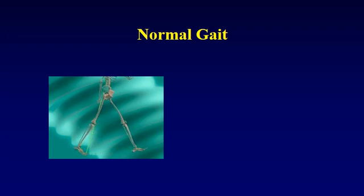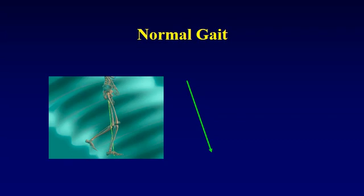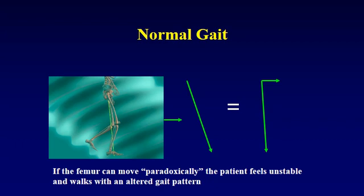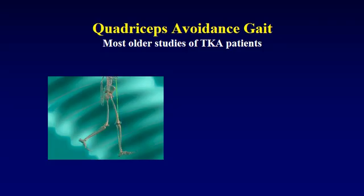If we analyze this gait slightly differently, we see that just after heel strike, the vector is significantly directed from posterior to anterior onto the floor. And if we resolve that vector into both horizontal and vertical components, we can see that there is a very significant horizontal component. And if the foot is firmly fixed to the floor, then the body, the opposite leg, and the femur on the support side all tend to move forward while the foot is fixed. That force shows up as a posterior-to-anterior force trying to push the femur off the top of the tibia. If the femur can move paradoxically — that is, if it can move forward — the patient feels unstable and very often walks with an altered gait pattern. The altered gait pattern is called a quadriceps avoidance gait.